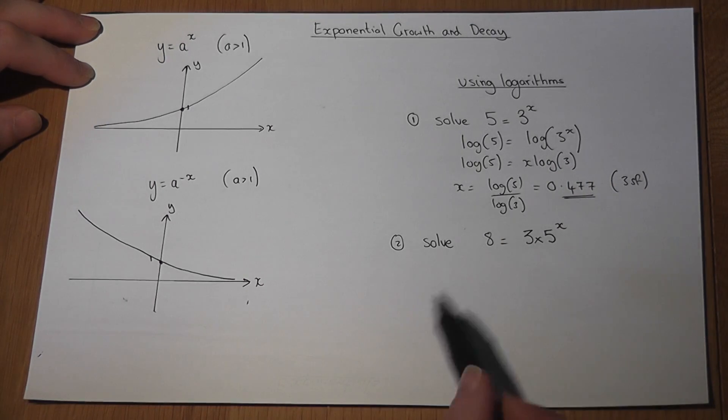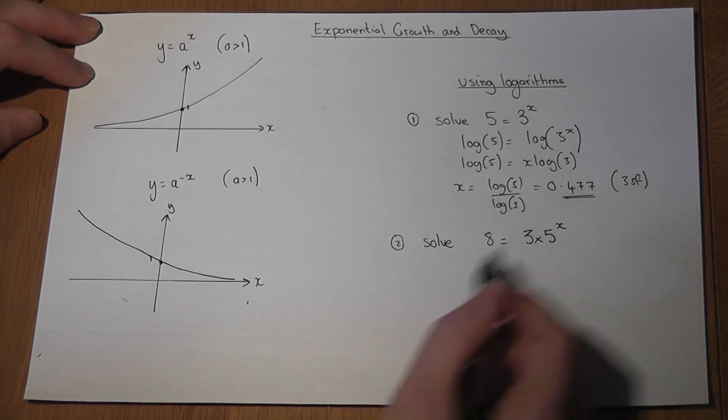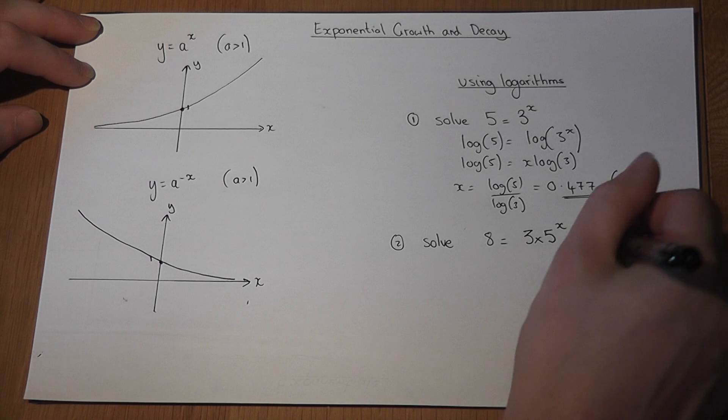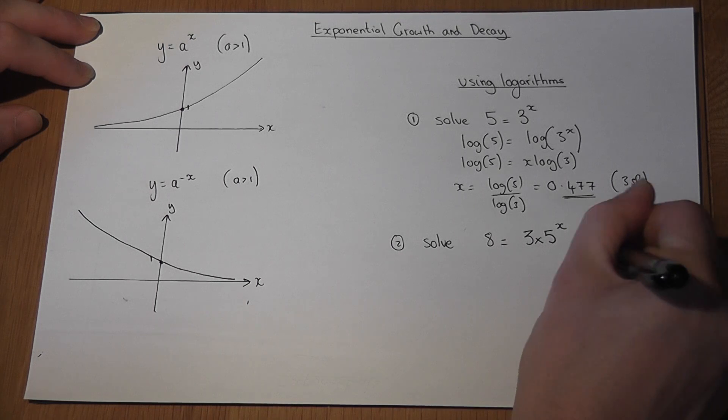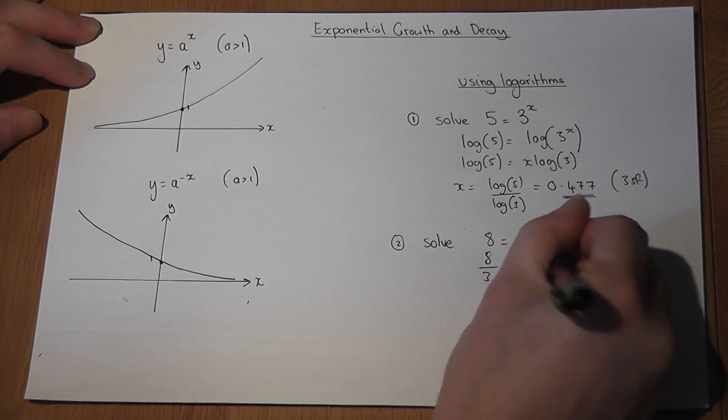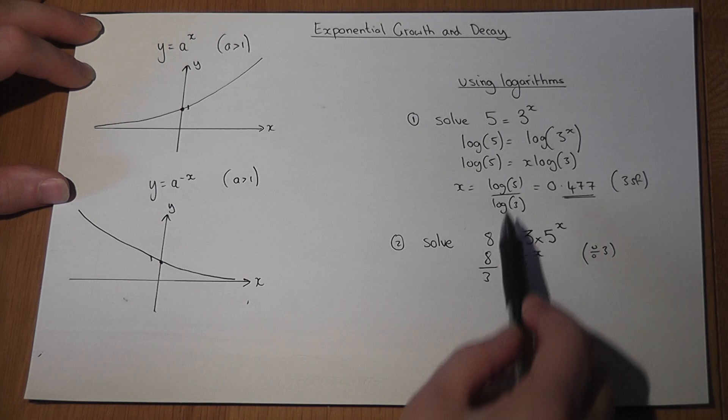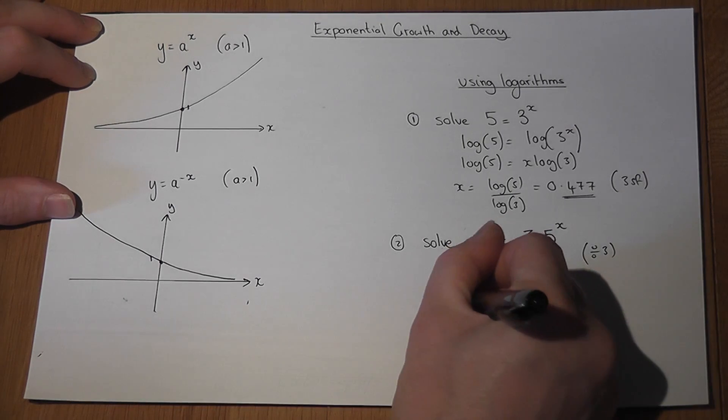Now the second question is very similar, but this is 3 there, which pre-multiplies the 5 to the power of x. So the first step is to divide by 3. So 8 over 3 equals 5 to the power of x. We now have the same standard question as above, so we can take logs of both sides.